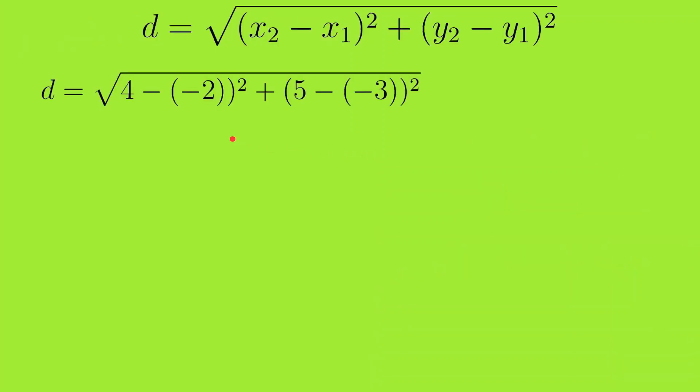In that case, the x and y coordinates of the second point, that is the blue point, were 4 and 5. And of the red point were minus 2, minus 3. So it is 4 minus minus 2 whole squared and 5 minus minus 3 whole squared, and this is all under root. So 4 minus minus 2 is 4 plus 2, that is 6, and 5 minus minus 3 is 5 plus 3, that is 8.